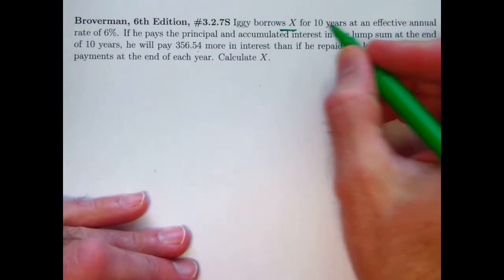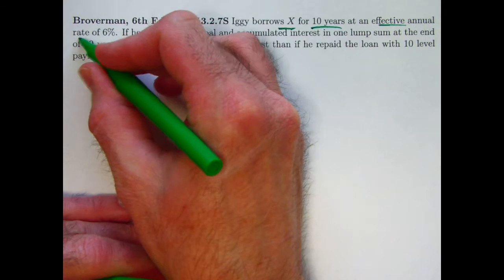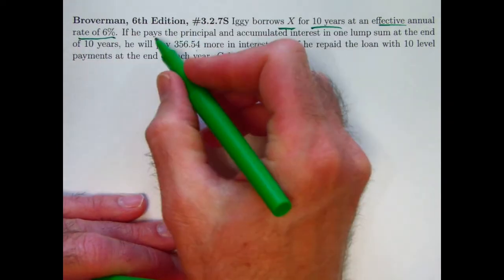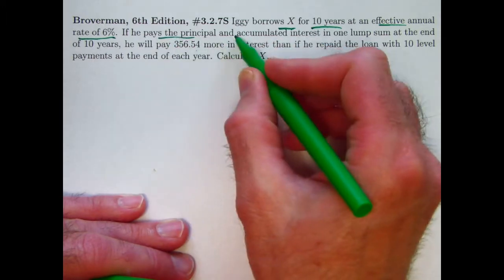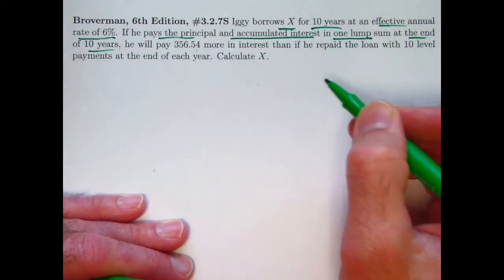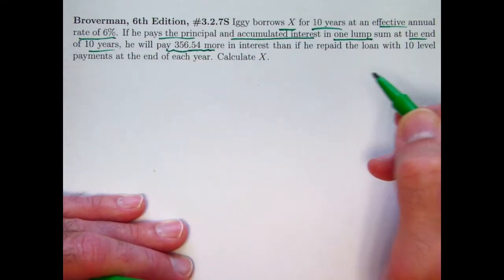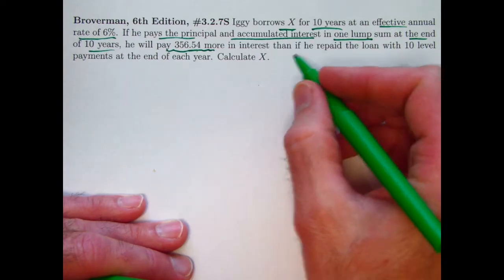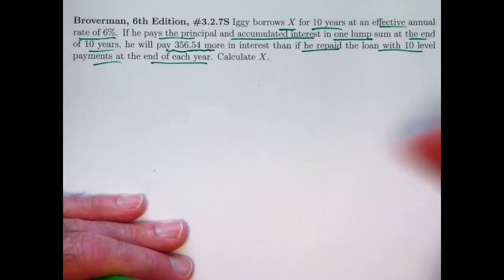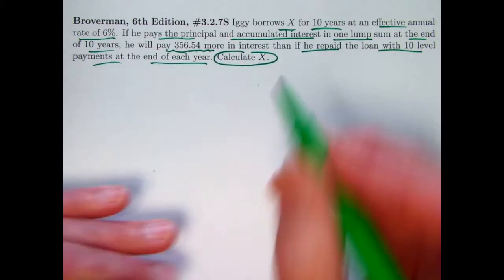Iggy borrows X for 10 years at an effective annual interest rate of 6%. There's two possible payment plans. If in the first plan he pays principal and accumulated interest in one lump sum at the end of 10 years, he's going to pay 356.54 more in interest than the other plan, and that other plan is if he repaid the loan with 10 level payments at the end of each year as an annuity immediate. The goal is to calculate X, the loan amount.